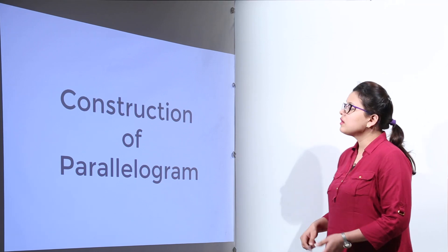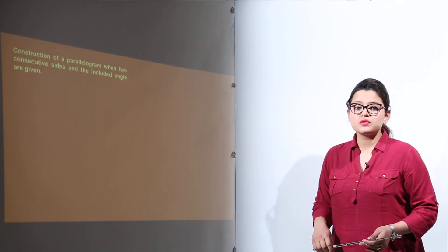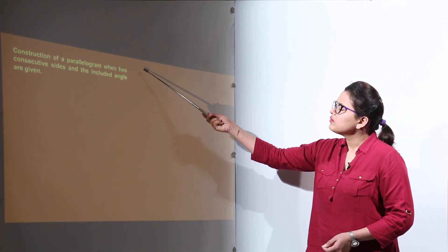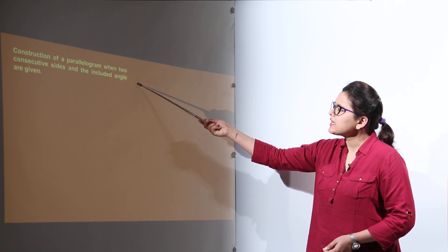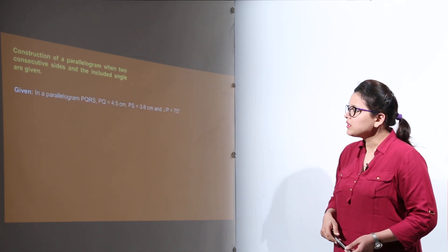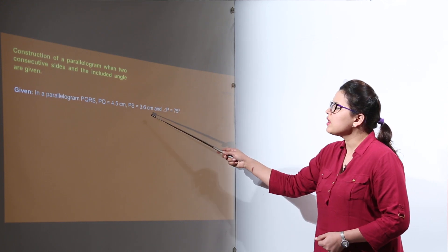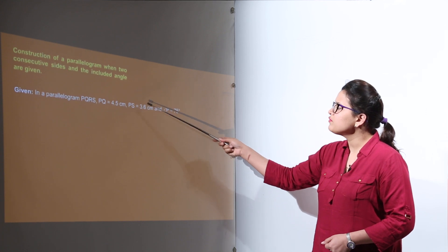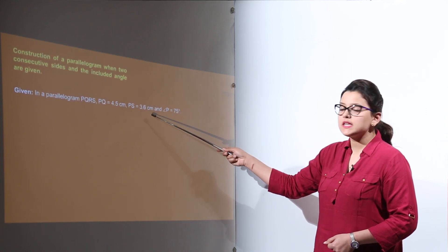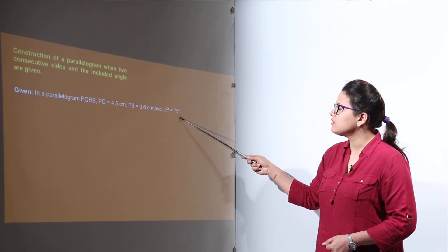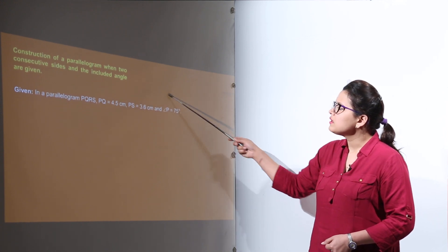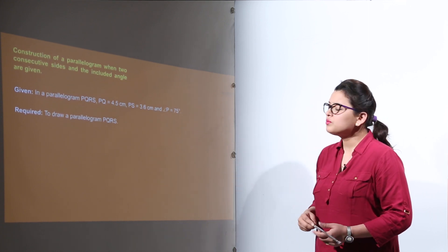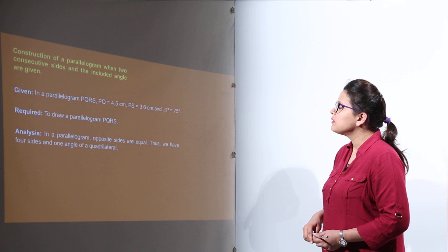Construction of parallelogram. For this we have different types of cases. The first case is when we have to construct a parallelogram in which the two consecutive sides and included angle are given. Here the parallelogram PQRS is given with measurements PQ equal to 4.5, PS equal to 3.6, and angle P equal to 75 degrees. We have to make a parallelogram having these measurements and are required to draw parallelogram PQRS.